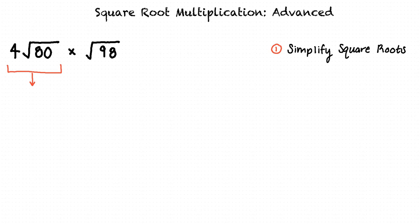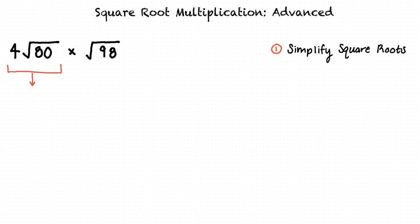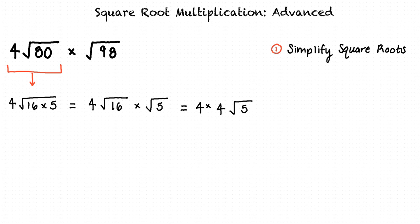How do we do that? To simplify four times the square root of 80, we will first look for the greatest factor of 80 that is a perfect square. Note that 80 equals 16 times 5, where 16 is a perfect square. Therefore, four times the square root of 80 equals four times the square root of 16 times 5, which equals four times four times the square root of 5, which equals 16 times the square root of 5.